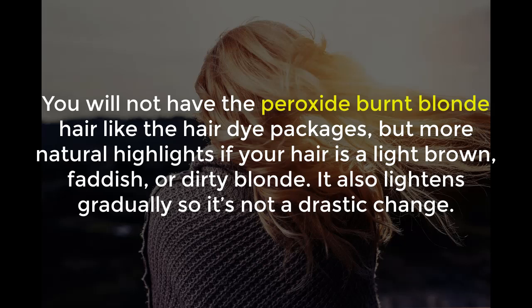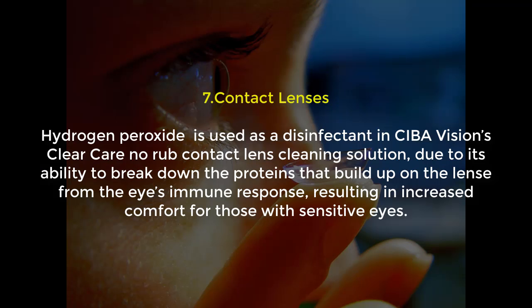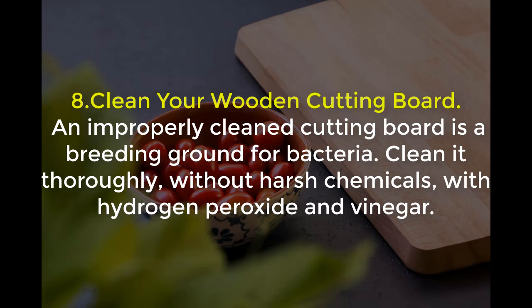Number seven: contact lenses. Hydrogen peroxide is used as a disinfectant in CIBA Vision's Clear Care contact lens cleaning solution, due to its ability to break down the proteins that build up on the lens from the eye, resulting in increased comfort for those with sensitive eyes. Number eight: clean your wooden cutting board. An improperly cleaned cutting board is a breeding ground for bacteria. Clean it properly without harsh chemicals using hydrogen peroxide and vinegar.